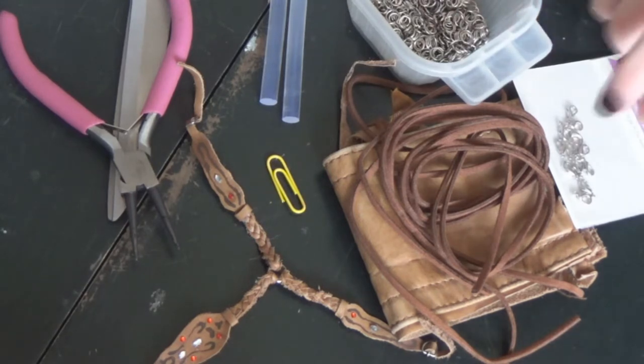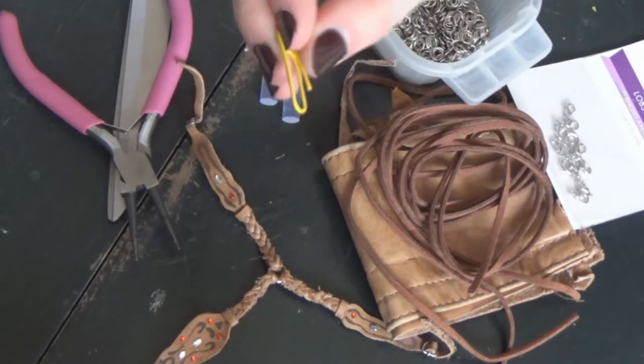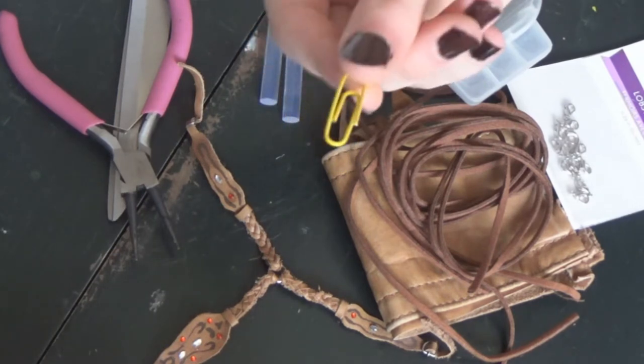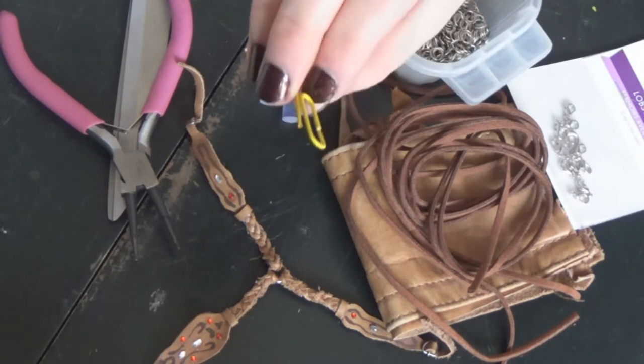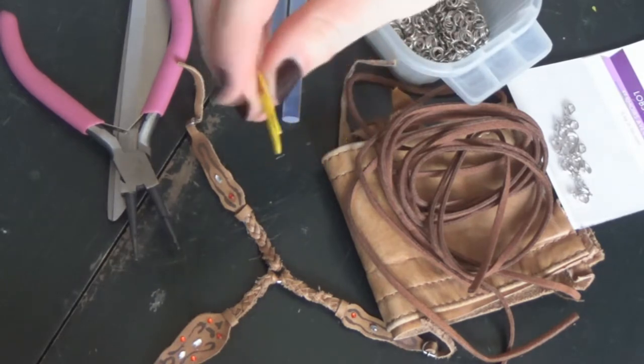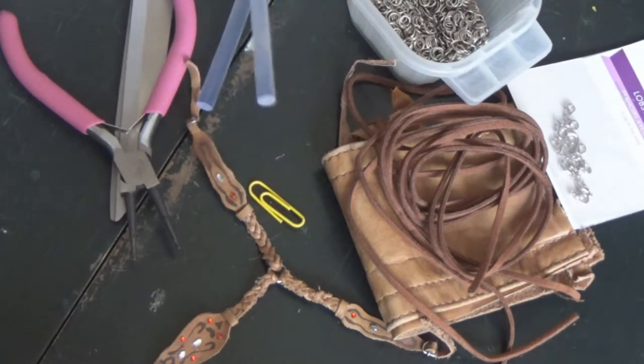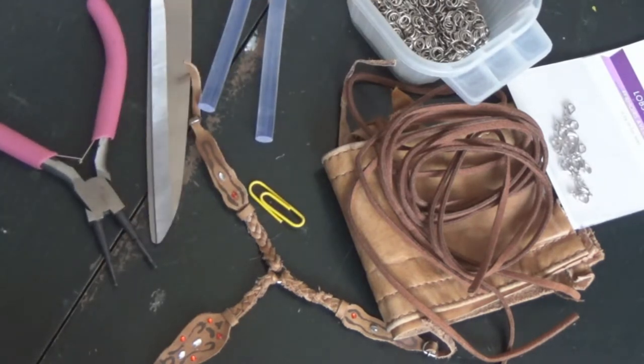Some jump rings and a lobster clasp. Some type of thin wire that's strong. I like to use paper clips to form a buckle. Paper clips are really useful for this because they're thin but really strong and they won't bend out of shape. Some type of glue and your appropriate tools such as pliers and scissors and maybe something to write with.